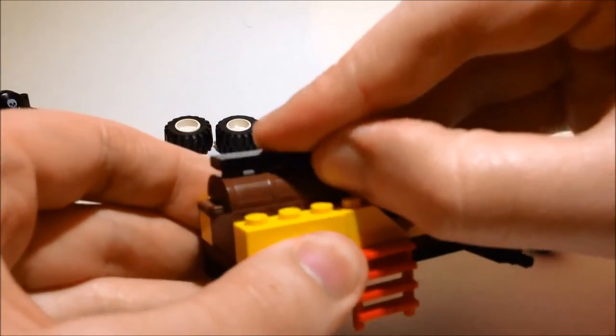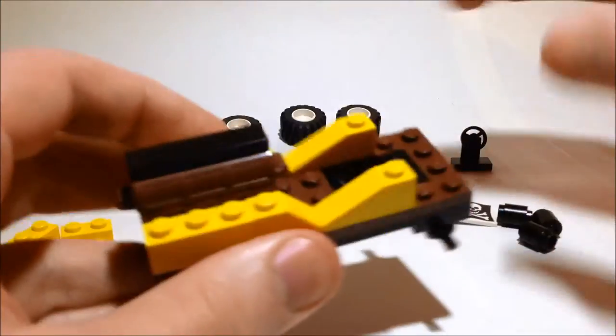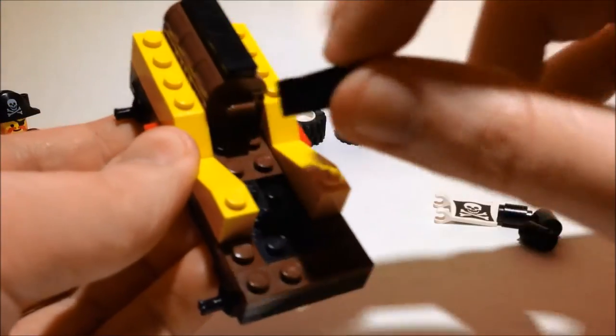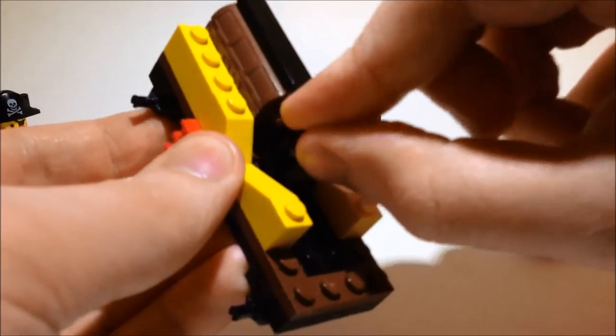On top of the chest goes a 1x4 black tile. The steering wheel goes in this slot right here, just behind the treasure chest.